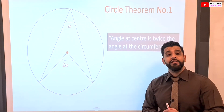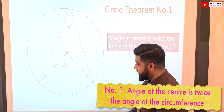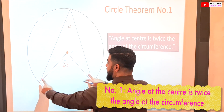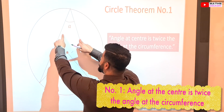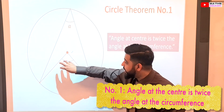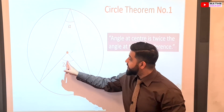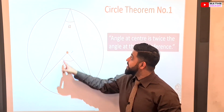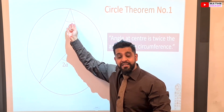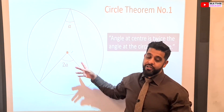On to our first circle theorem: the angle at the center is twice the angle at the circumference. You have two points, with two lines meeting the center, and from those same two points two lines meet at the circumference. The angle at the center is double the angle at the circumference. For example, if the angle at the circumference is 100 degrees, then the angle at the center will be 50 degrees. Likewise, if the center angle is 60 degrees, then the circumference angle will be 120 degrees.